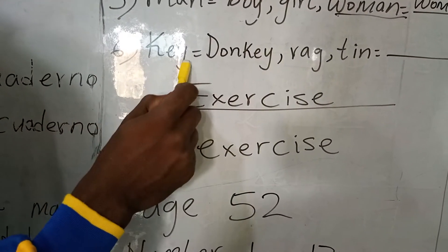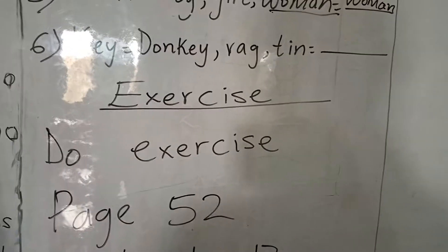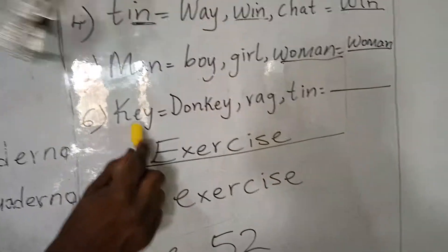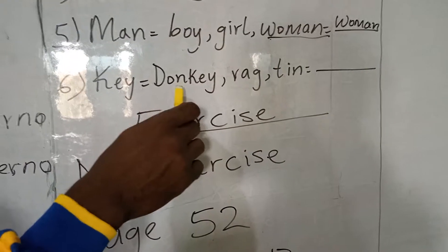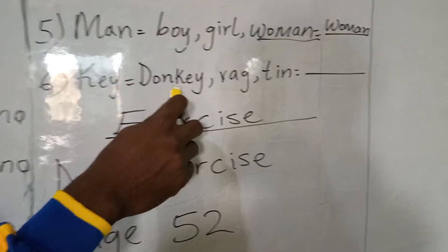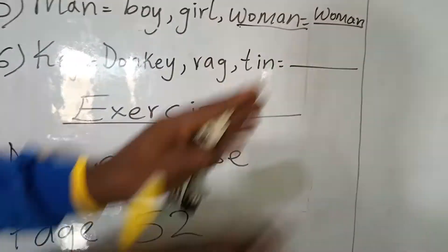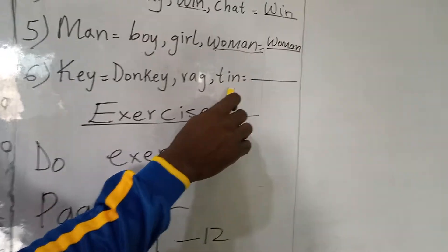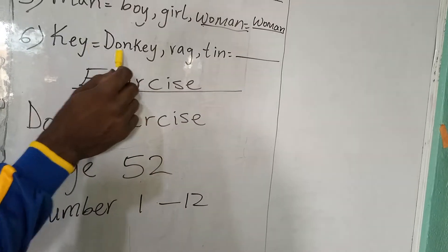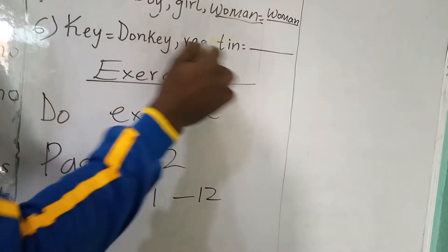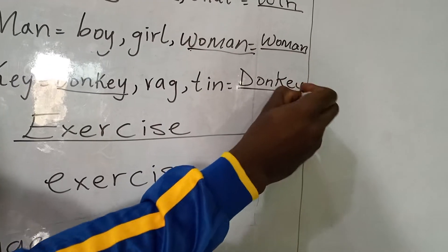Example 6: key. A key is what we use to open the house. Then we have a donkey — a donkey is an animal that carries cargo or people. They want us to look at the word which sounds the same way as 'key.' So we have donkey. You underline this word and come and write it here.